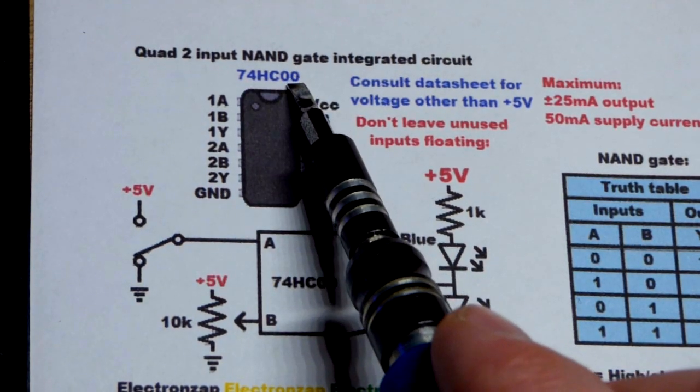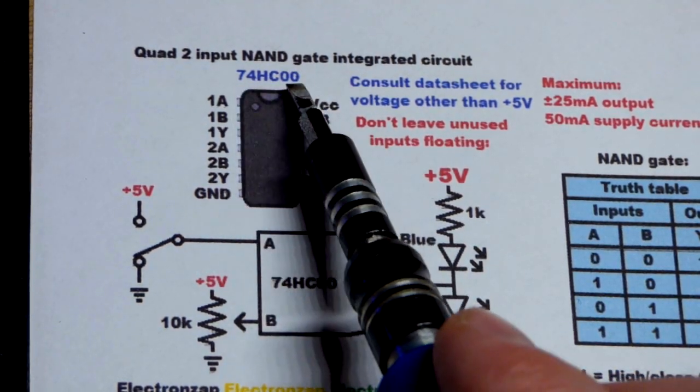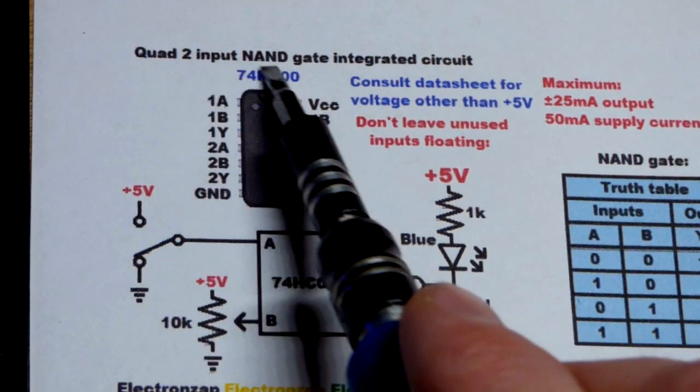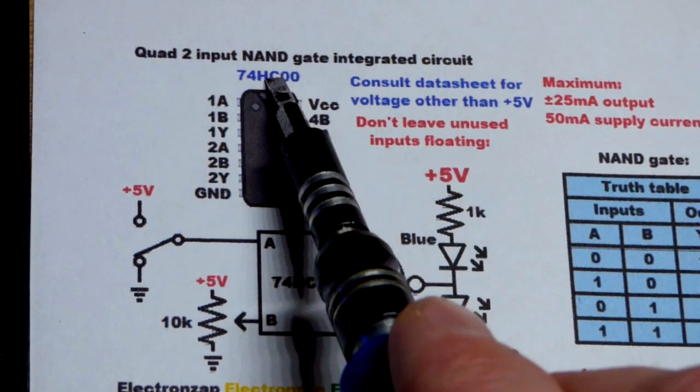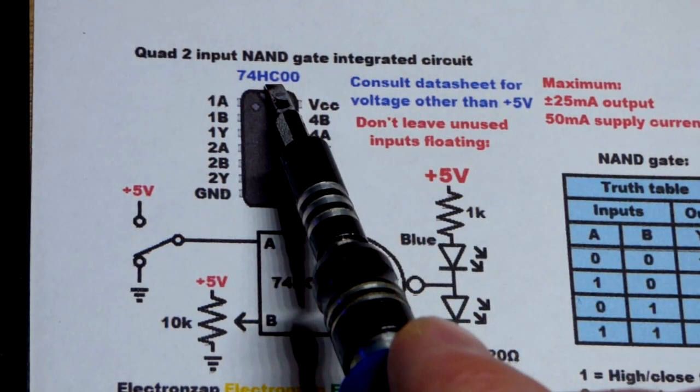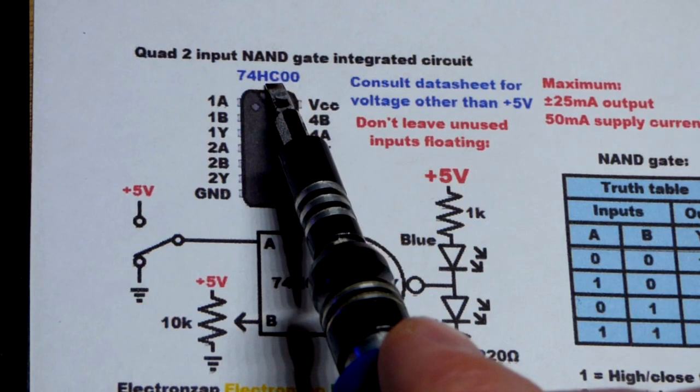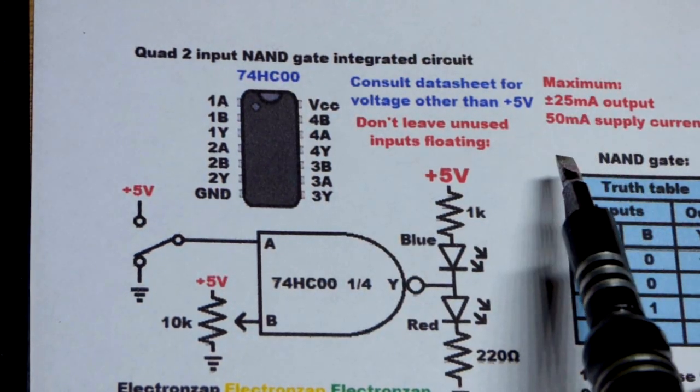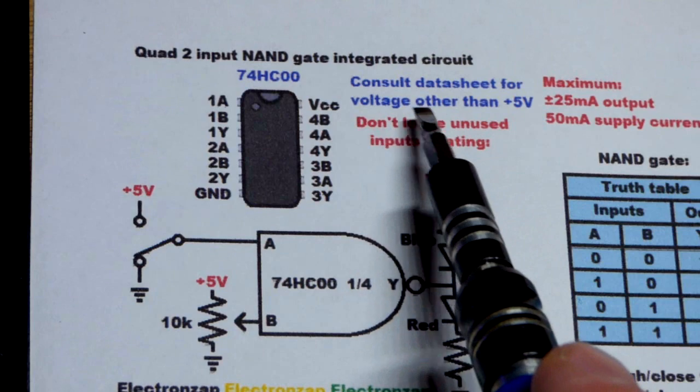You gotta look at the last two numbers. 7400 series, last two numbers tells you what logic gates are in there, and then the high-speed CMOS tells you the kind of transistors that are in there. You want to make sure you look at those letters when you look at a datasheet because the voltages and currents you can use will vary a bit.